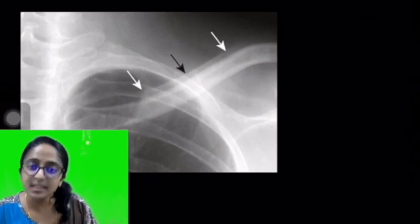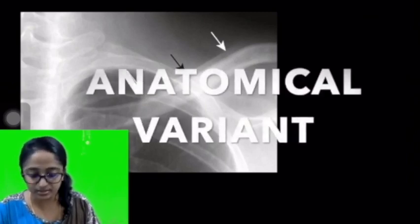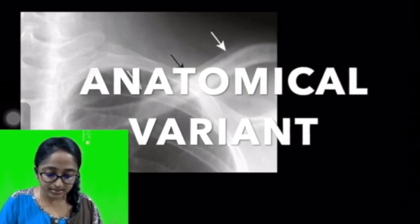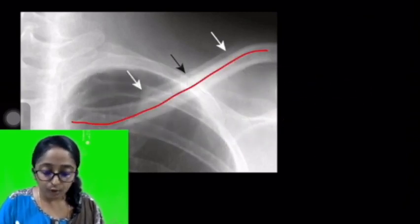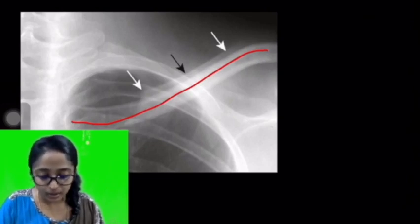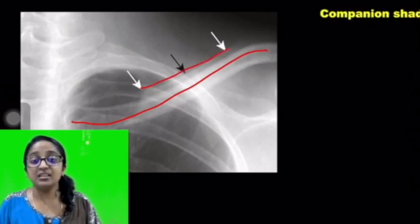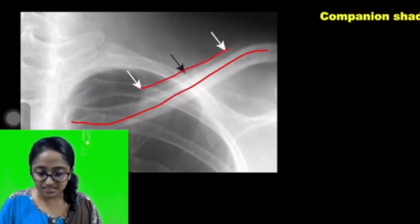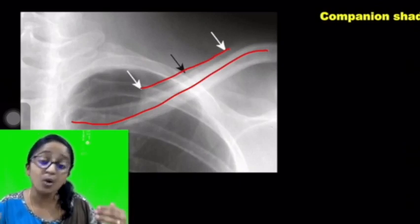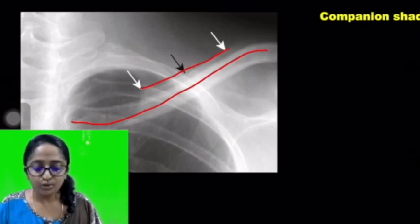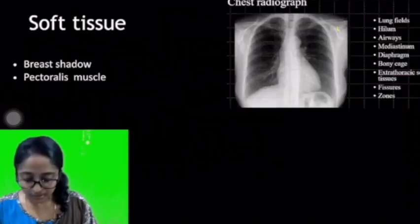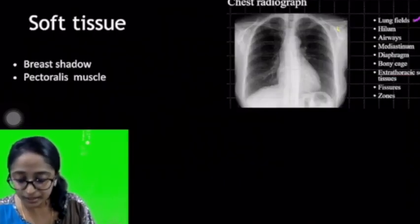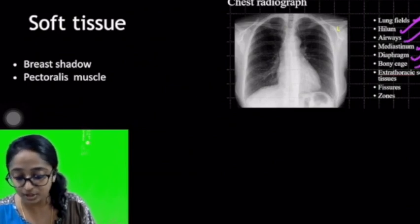This prompts me to mention an anatomical variant. In the image, you can see the clavicle, and paralleling its superior border is another dense structure marked by arrows — these are known as companion shadows, formed by skin folds overlying the clavicle. Never mistake them for any gross pathology. Thus, we've covered the lung fields, hilum, airways, mediastinum, diaphragm, and bony cage.